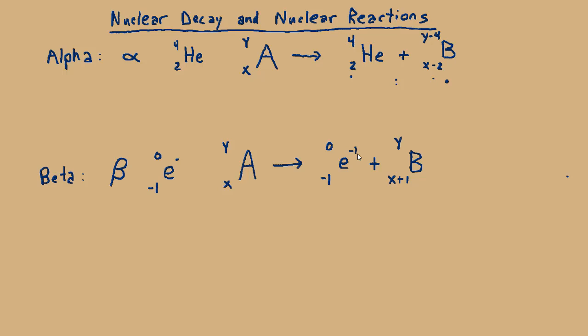An alpha decay will rectify that situation because when you lose a helium nucleus you're losing two of your protons and it will stabilize that. In essence the element that is the product is moved two spaces to the left on the periodic table.